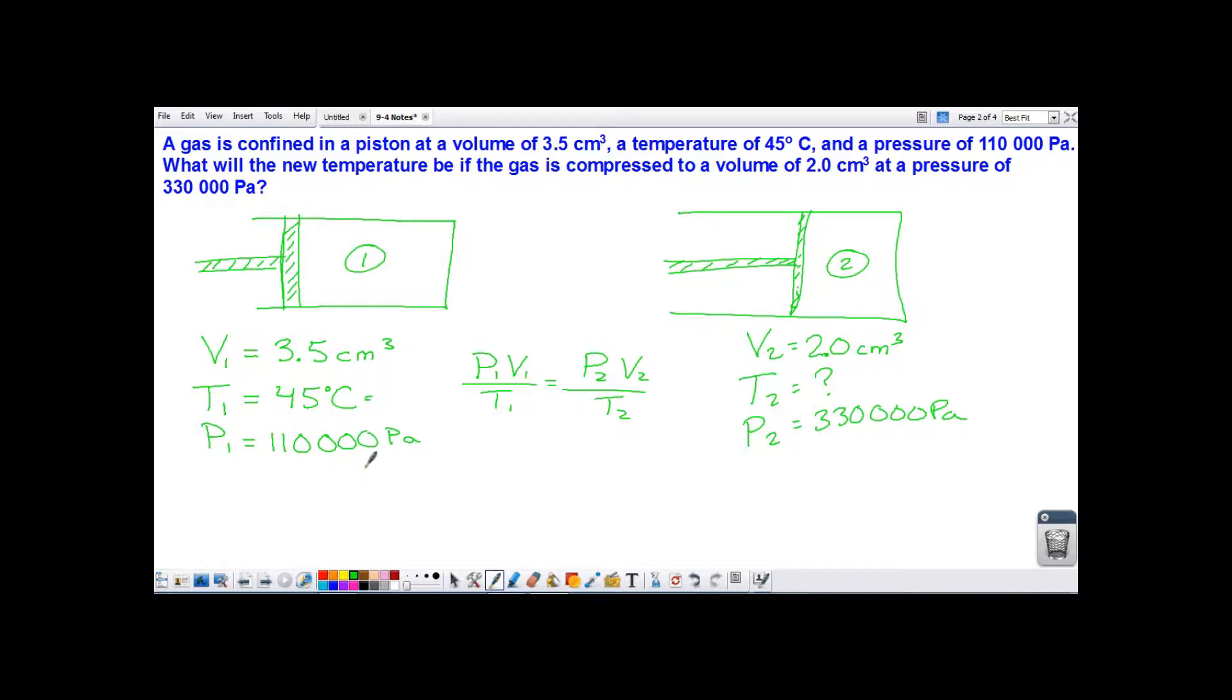So I need to convert the 45 degrees Celsius into Kelvin. And the way we do that is simply by adding 273 and 15 hundredths. And again, in this class, if you skip the 15 hundredths, that's okay. But if I do that, I'm going to get 318 and 15 hundredths Kelvin.